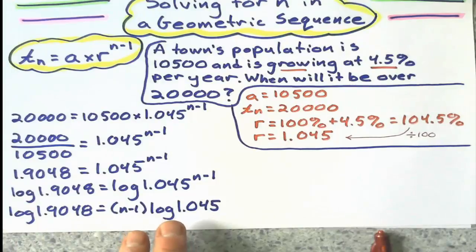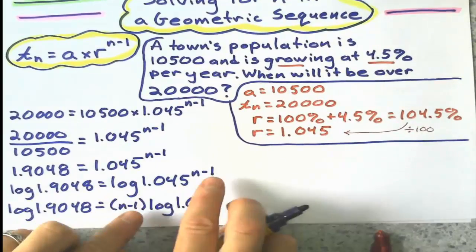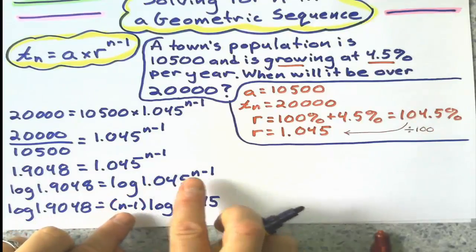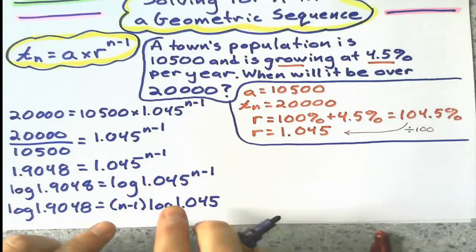Now, this step can be skipped in the working, but I just want to show that when we have a log raised to a power, it's the same as multiplying that exponent by the log. That's just a property of log. I have other videos of that.